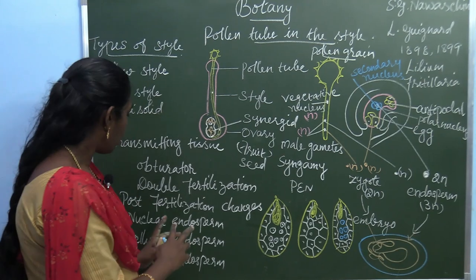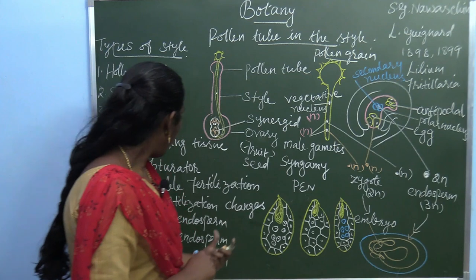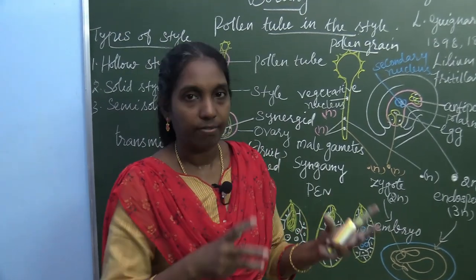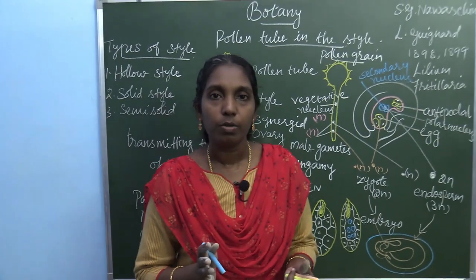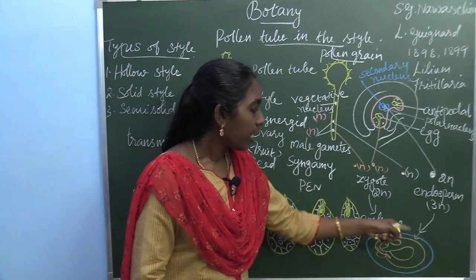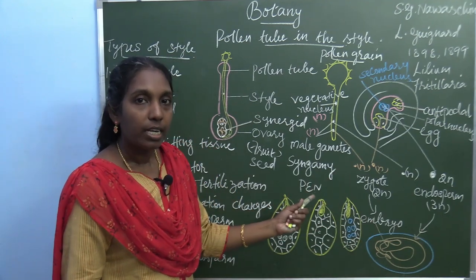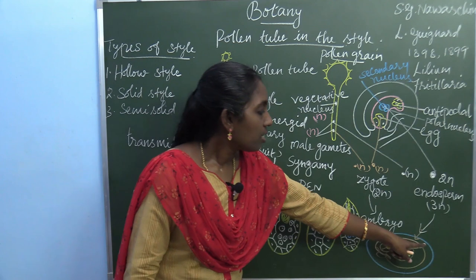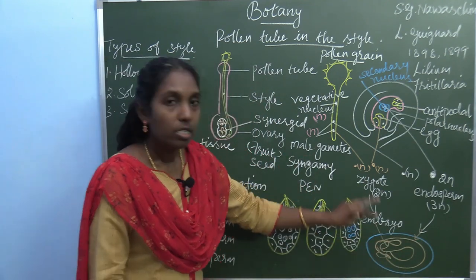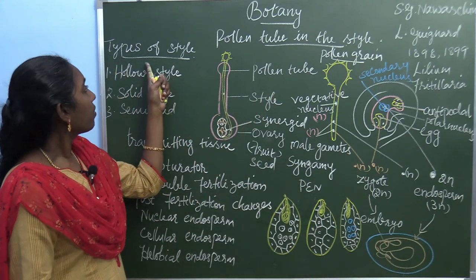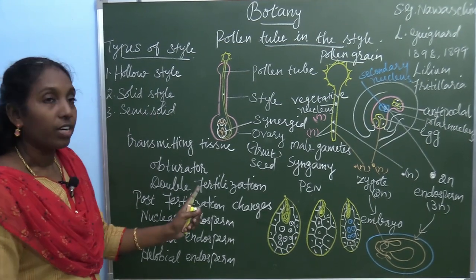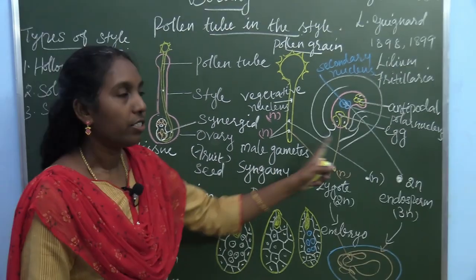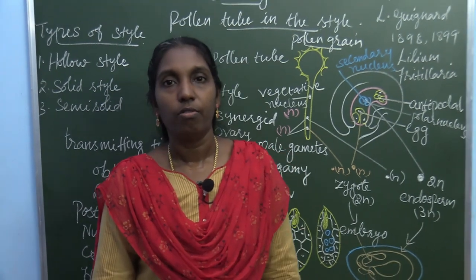Apart from these three types, there is one more — ruminate endosperm — in which the endosperm surface is uneven or irregular. The function of the endosperm is to nourish the developing embryo, and in most cases the endosperm divides before the division of the zygote. The key topics covered in this class are: types of style, double fertilization, triple fusion, post-fertilization changes, and types of endosperm. Questions will be shared via WhatsApp. Thank you.